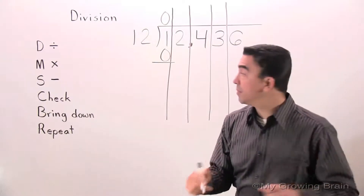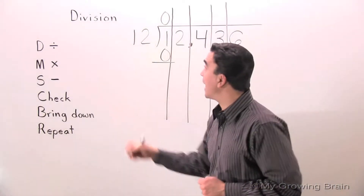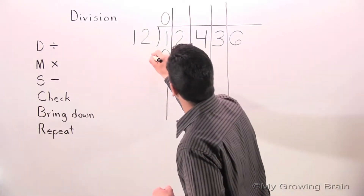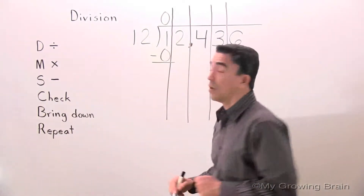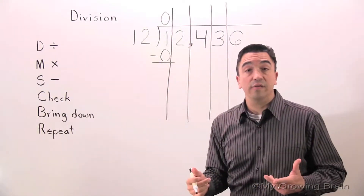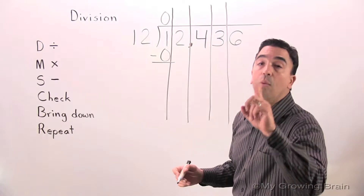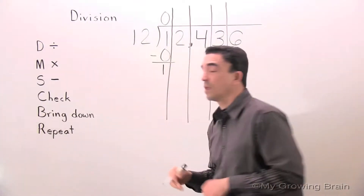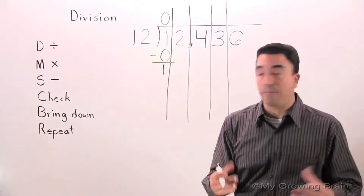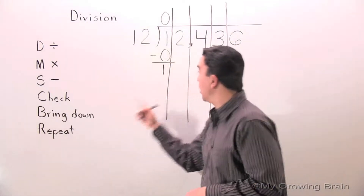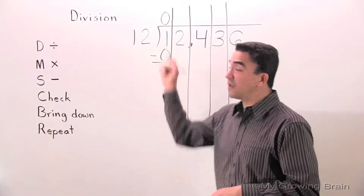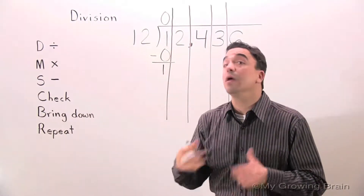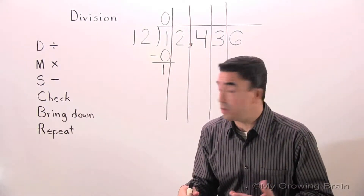Next step: Subtract. 1 minus 0 equals 1. Next step: Check. 1 is less than 12 — keep on going.